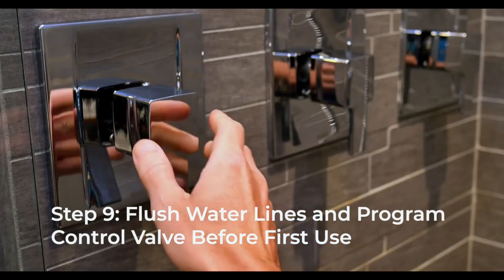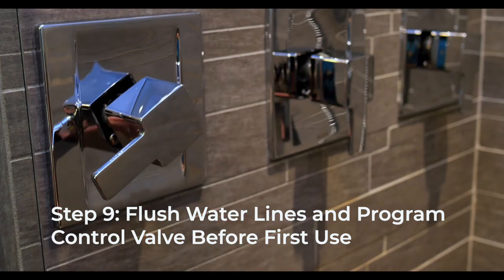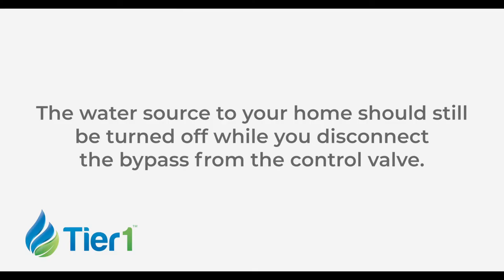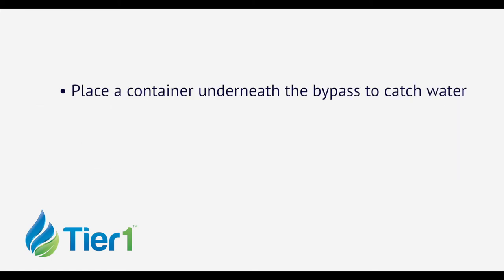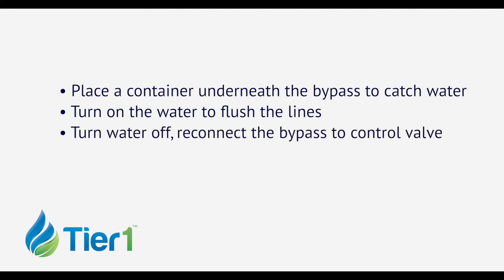Before operating your water softener for the first time, you should flush out your home's water lines and water softener bypass. The water source to your home should still be turned off while you disconnect the bypass from the control valve. Place a container underneath the bypass to catch water. Then turn on the water source to allow the water to flow through and remove any foreign material from the water lines. After you've flushed the lines, turn off the water source and reconnect the bypass to the control valve, checking for any leaks.